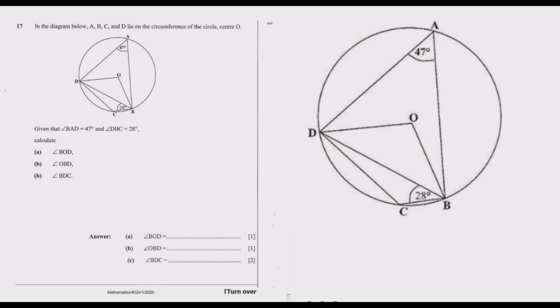The first thing we can do is find the angles using the properties of a circle under the circle theorem. What we are going to use is the fact that the angle at the center is twice the angle at the circumference. So if this angle is 47 degrees, this angle should be 47 multiplied by 2, which is 94 degrees.